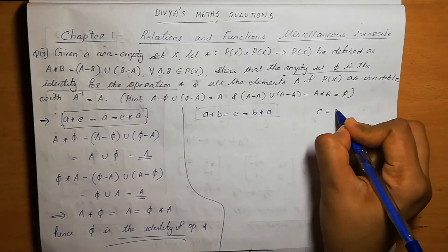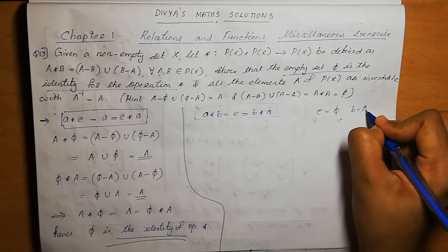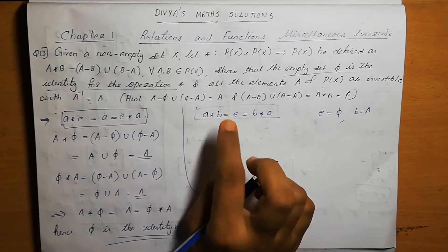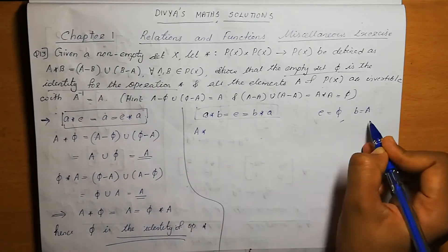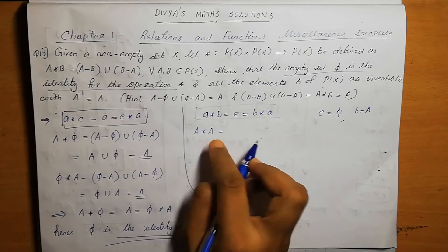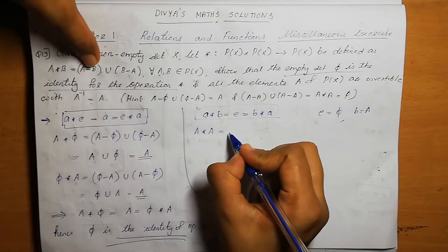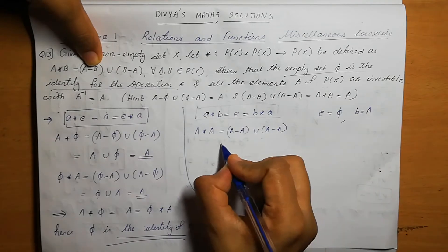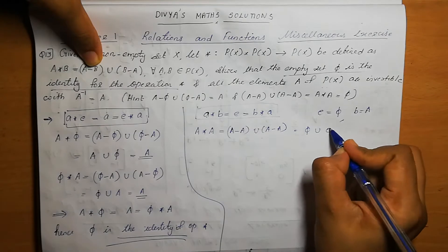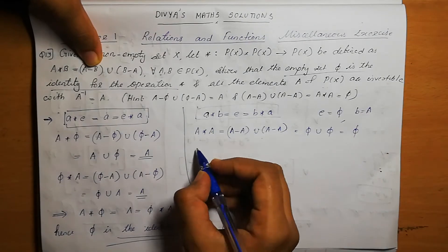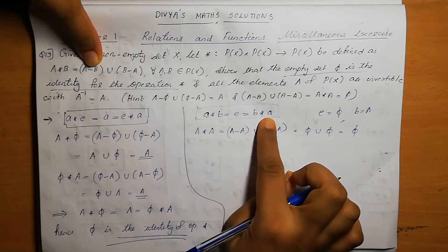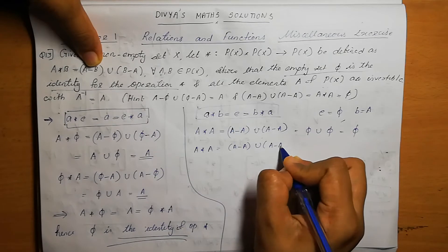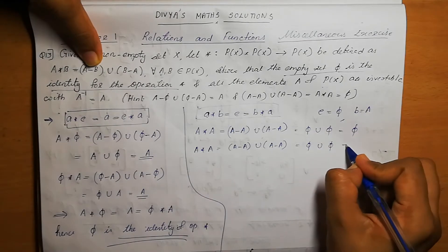Here E equals φ, and we take B equal to A as well. So we find A star A. A star A means A minus A union A minus A. A minus A is null set, union null set, which is null set. Similarly B star A means A star A equals A minus A union A minus A, which gives null set union null set equals null set.